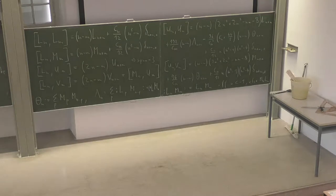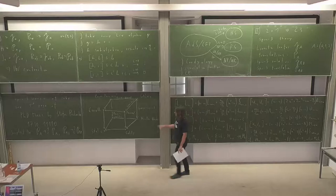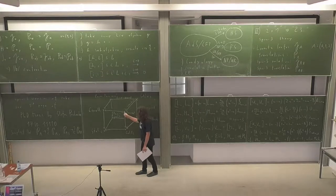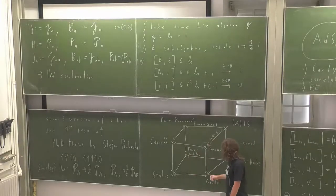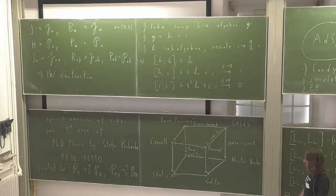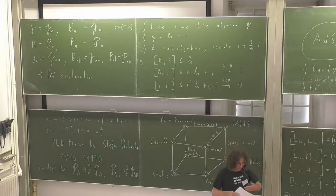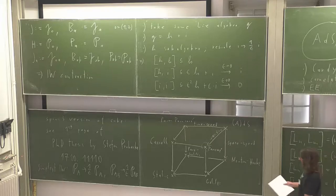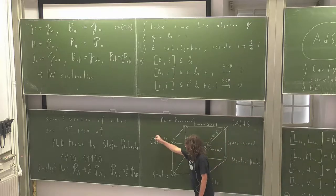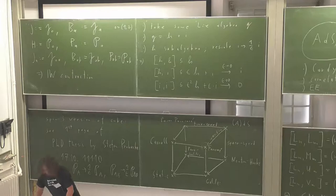We also worked out the Carrollian and Galilean limits of spin-3 gravity, defining spin-3 Carroll gravity and imposing boundary conditions. Using these IW contractions, you have a new playground where you can design theories to your needs. If for some reason you're interested in a spin-N theory in the non-relativistic limit, there's a precise way to define it and establish the asymptotic symmetries. That's all I wanted to say about 2+1 dimensions.